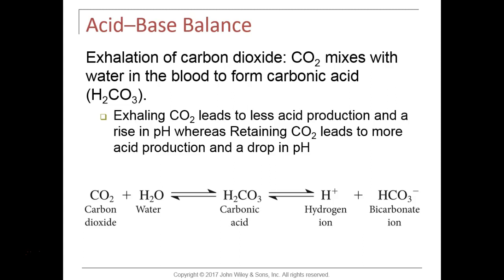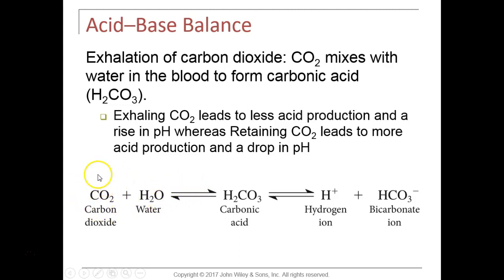To maintain a more alkaline blood pH of 7.35 to 7.45, hydrogen must be excreted out into what becomes urine in the tubule lumen. These intercalated cells use active transporters powered by ATP to actively pump hydrogen up its concentration gradient and make the urine more acidic. If blood pH is too low, intercalated cells excrete more acid in urine.